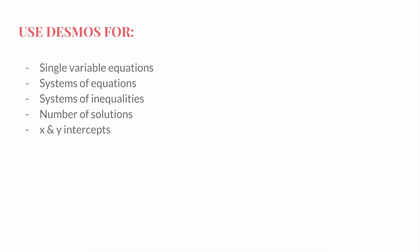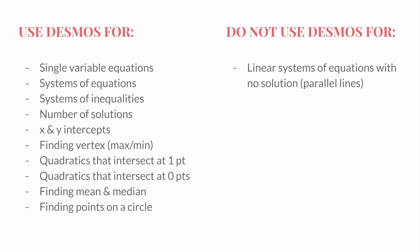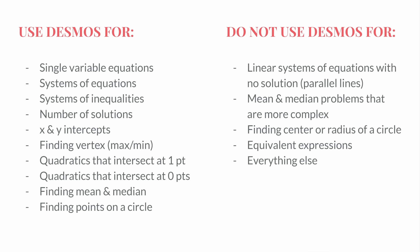And so to summarize everything from this video, you should be using Desmos for single variable equations, systems of equations, systems of inequalities, number of solutions, x and y intercepts, vertices of quadratics, quadratics that intersect a line at one point, quadratics that intersect the line at zero points, computing mean and median directly, and finding valid points on a circle. You should not use Desmos for linear systems of equations with no solution, mean and median problems that aren't literally just finding mean and median, finding the center or radius of a circle, equivalent expressions, or literally anything else on the SAT.